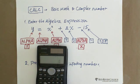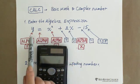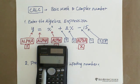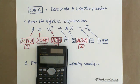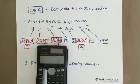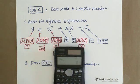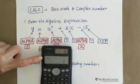First of all, you enter the algebraic expression Y — use the red one, ALPHA Y. The equal sign is also at the CALC button, but you need to press the ALPHA button first. So ALPHA button, then CALC, and you get the equal sign.